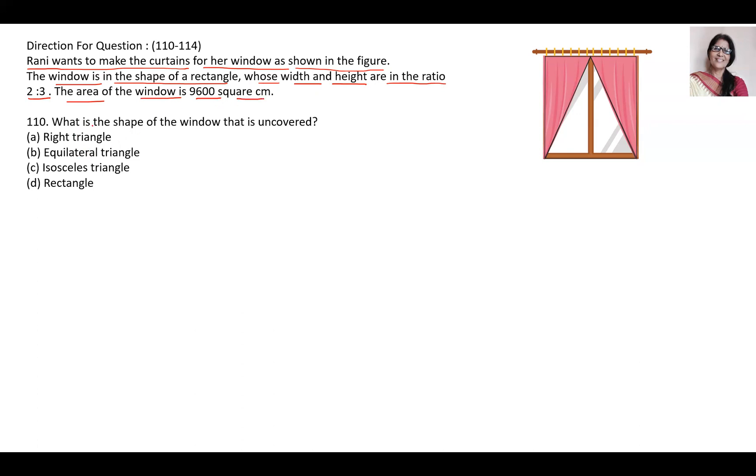First question is what is the shape of the window that is uncovered? Triangle, equilateral triangle, isosceles triangle, or rectangle.